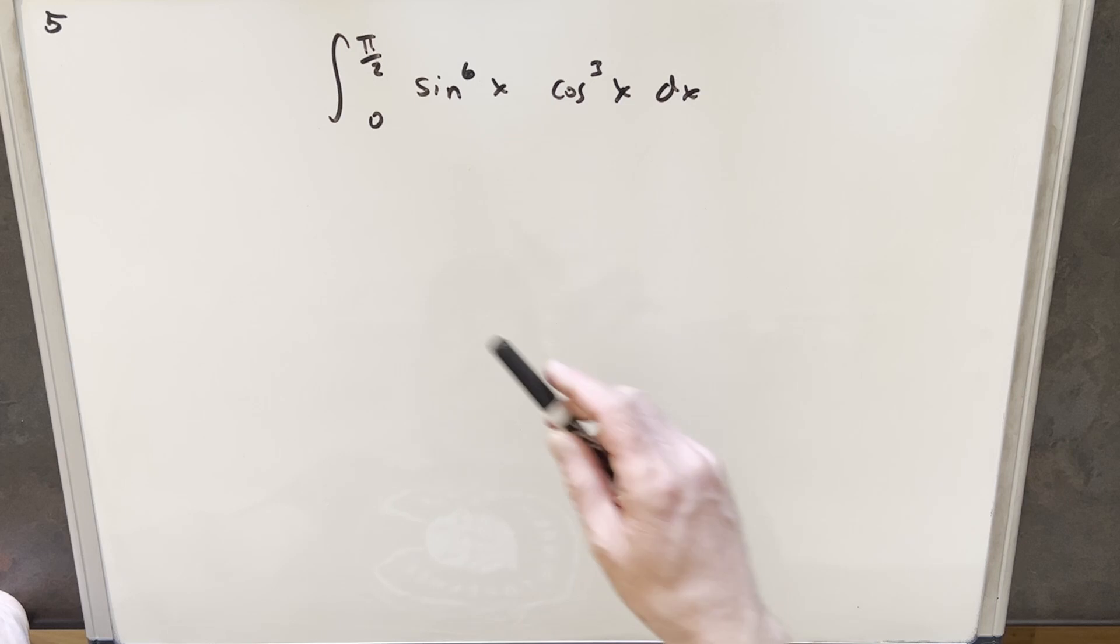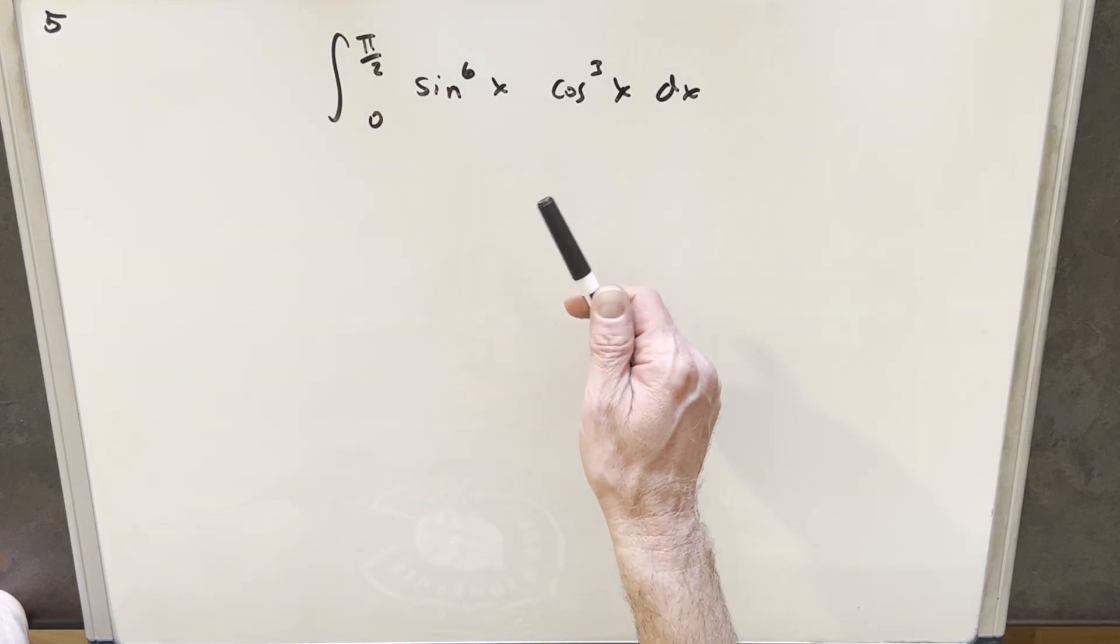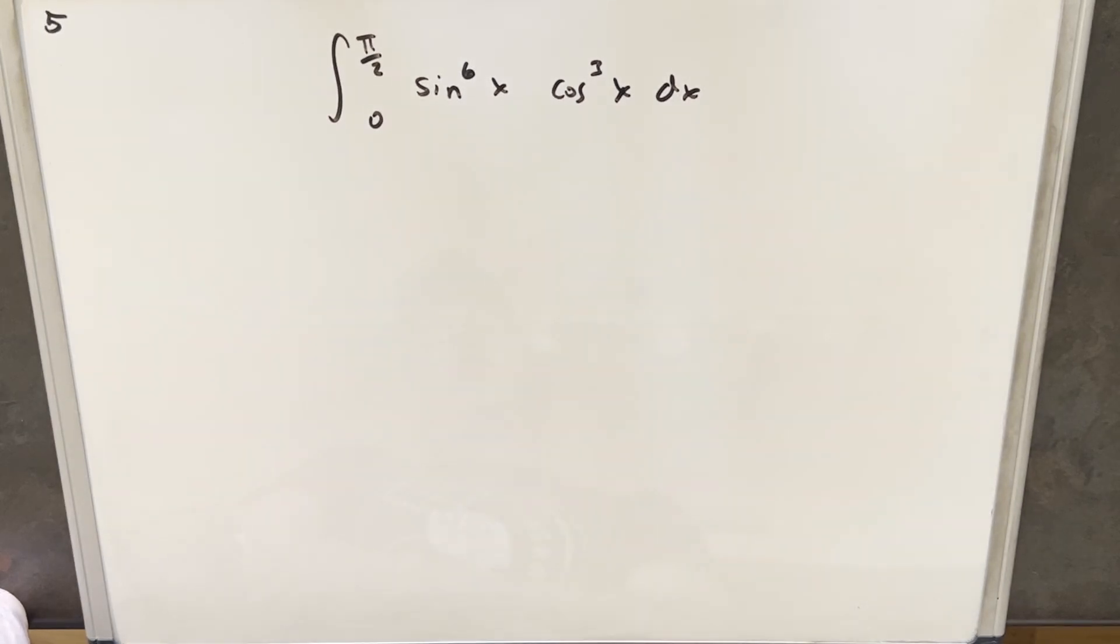Typically what we would do here is strip out a cosine and then set up a u substitution. Because we'd have a cosine squared, we could write that as 1 minus sine squared, and then we'd be in good shape.